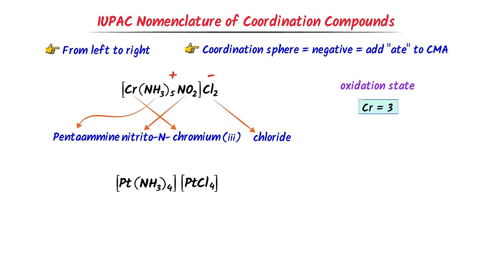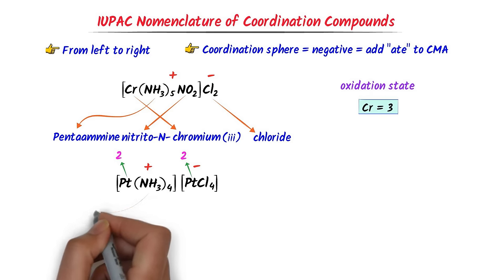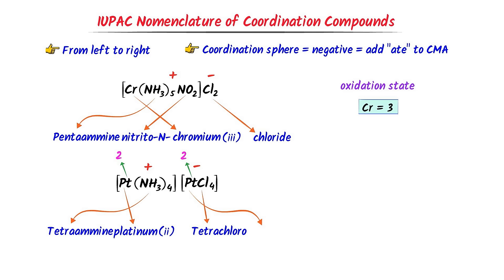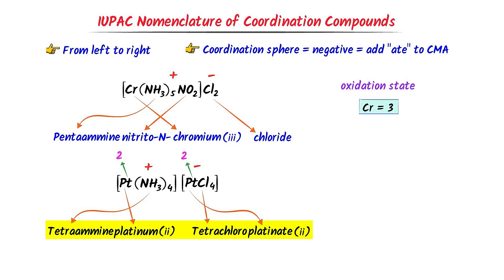Now consider this coordination compound. I write positive and negative charge. The oxidation state of platinum in the first coordination sphere is 2, and the oxidation state of platinum in the second coordination sphere is also 2. For the four molecules of NH3, I write 'tetraamine'. For platinum with a positive coordination sphere, I write 'platinum'. The oxidation state is 2. Secondly, for four ions of chlorine, I write 'tetrachloro'. The charge on the coordination sphere is negative, so for platinum I write 'platinate'. The oxidation state is 2. Thus I get 'tetraamine platinum(2) tetrachloroplatinate(2)'.